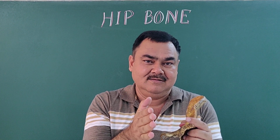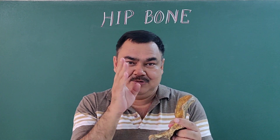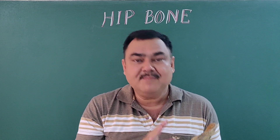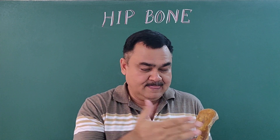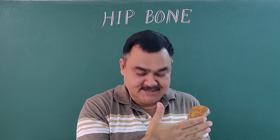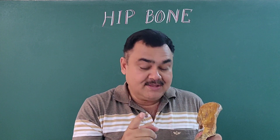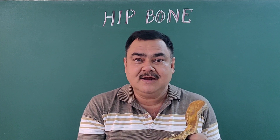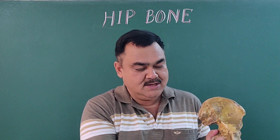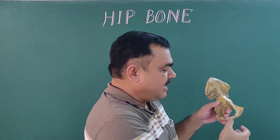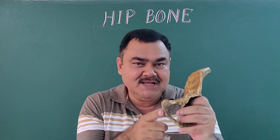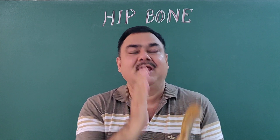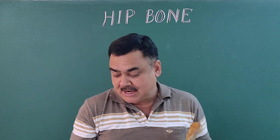Keeping three things in mind for anatomical position: first, the anterior superior iliac spine and pubic symphysis lie in the same coronal plane; second, the pelvic surface of the pubis is directed backward and upward; and third, the symphysial surface lies in the median plane. This is the anatomical position.